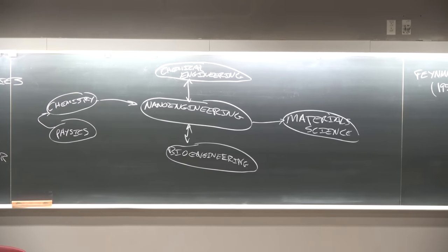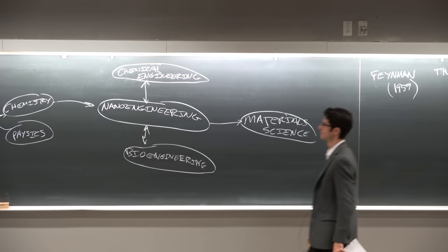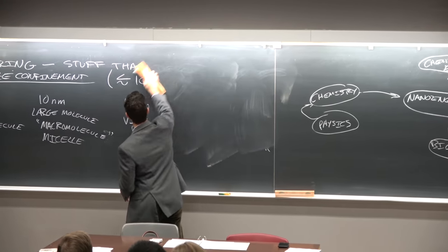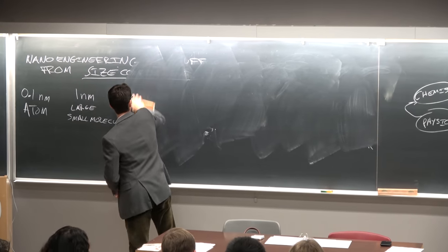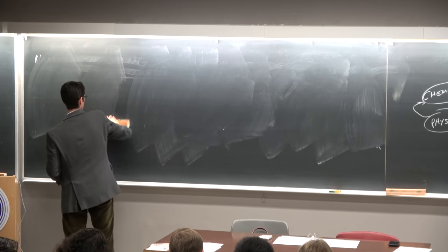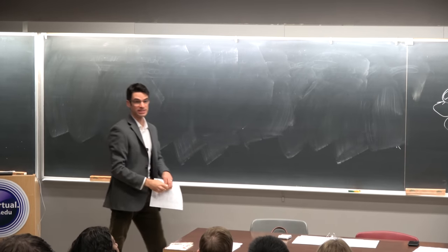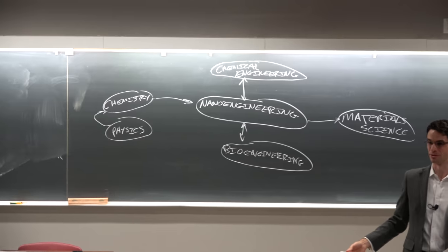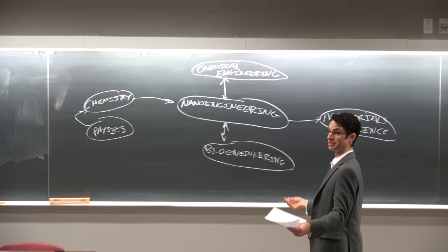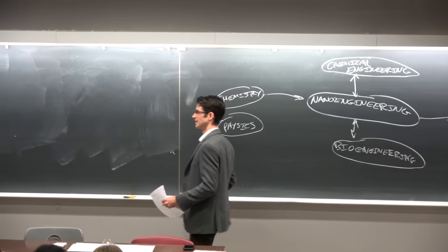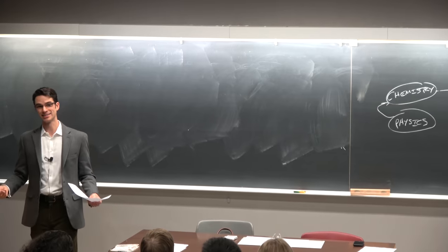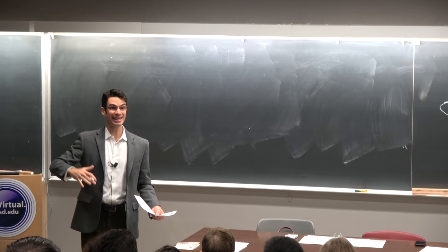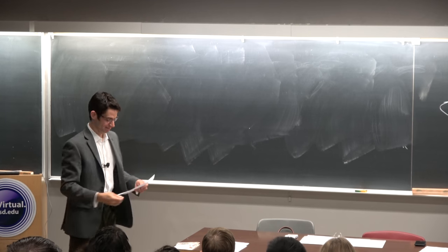Why is size confinement important? For a number of reasons. What color is gold? Gold. What color is a gold nanoparticle solution? Red. Orange. What color is cadmium selenide? Like silverish. What color are cadmium selenide nanoparticles? Any color of the rainbow. Those are quantum dots.